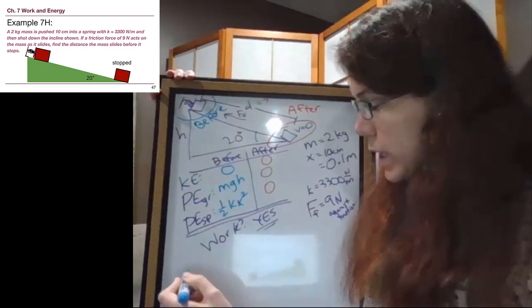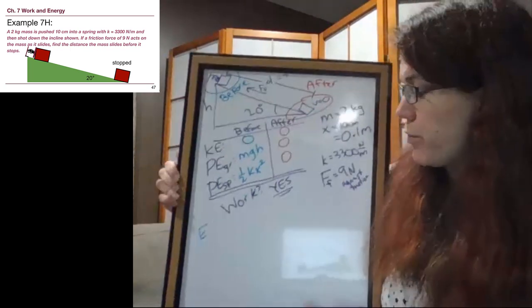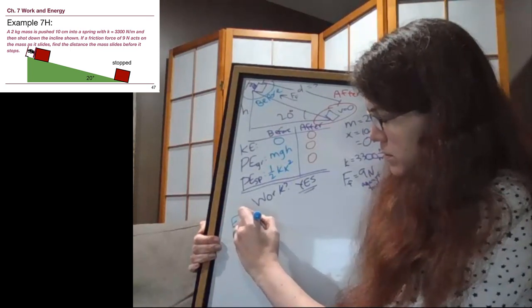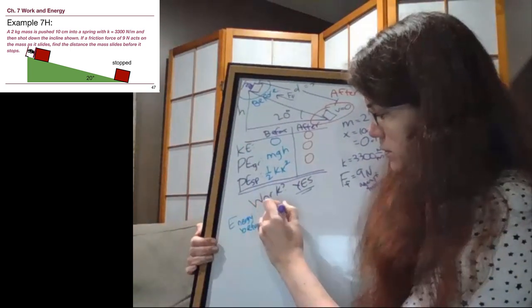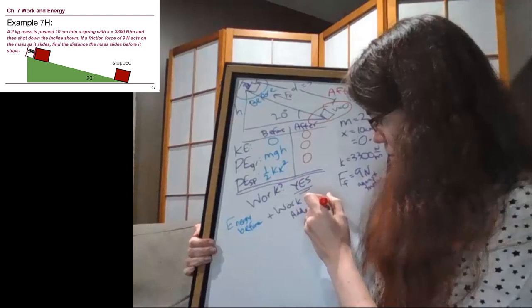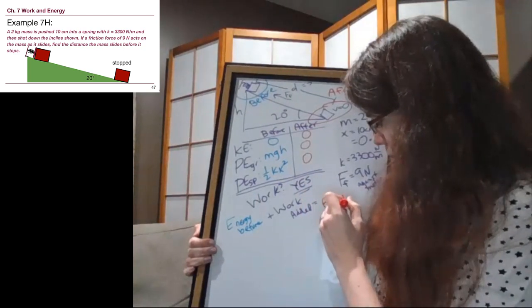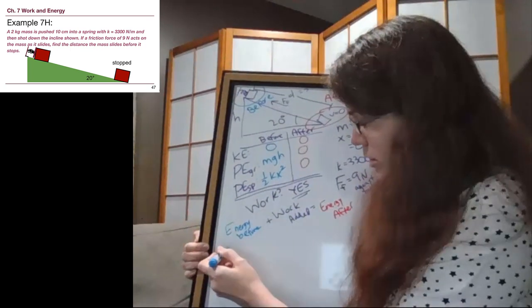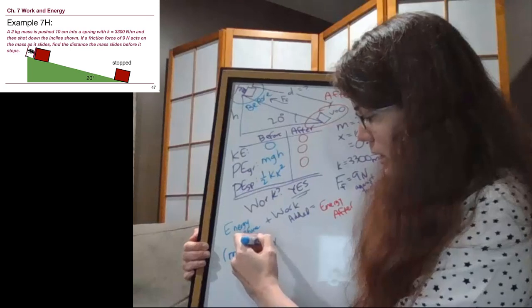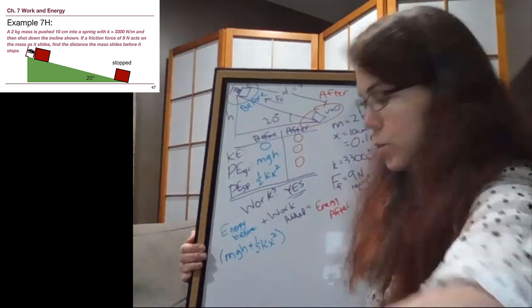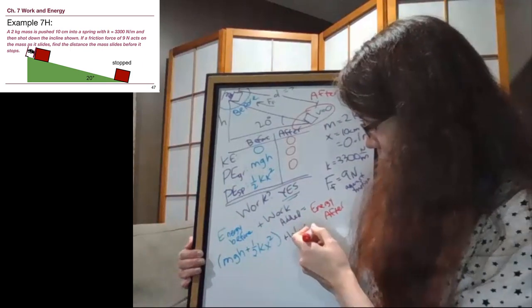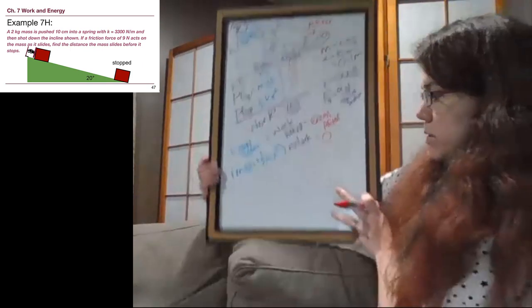Let's start to plug in what we have. As always, we have energy before plus work added equals energy after, and we can plug in those terms. The energy before terms, we have 0 plus mgh plus 1 half kx squared. For the work term, let's just go ahead and say work to begin with. And for the energy after, all of that equals 0, 0 plus 0 plus 0.